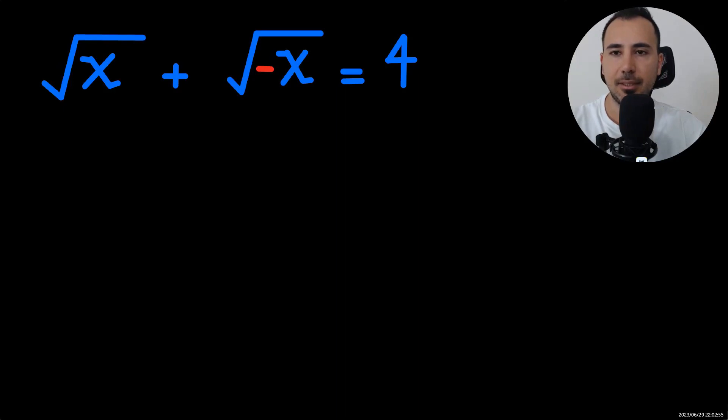As you see, the question looks very strange because we know that the radicands under the radicals are supposed to be equal or greater than 0.